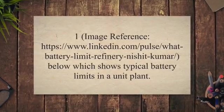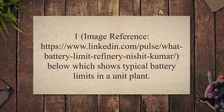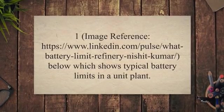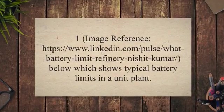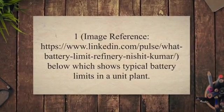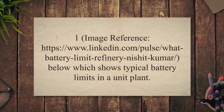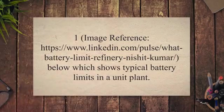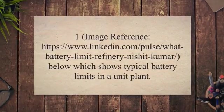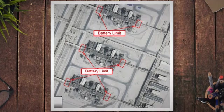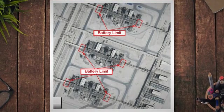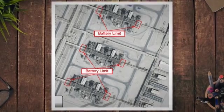The battery limits are clearly marked in the P&ID and plot plans. For each unit, there will be separate battery limits, as shown in a typical battery limit diagram for a unit plant. The battery limit is an important concept in the design, construction, and operation of a refinery or process plant for several reasons.